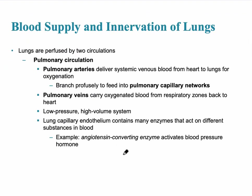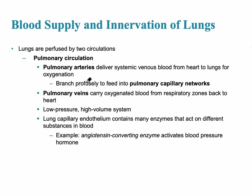The blood supply of the lungs involves two different circulations. The pulmonary circulation includes the pulmonary arteries and pulmonary veins. The pulmonary arteries carry venous blood — one of the only examples in the body — coming from the right side of the heart and picking up oxygen at the pulmonary capillary network. These capillaries are present in the connective tissue between the alveoli. The pulmonary veins then return oxygenated blood back to the left side of the heart for delivery to the entire system.